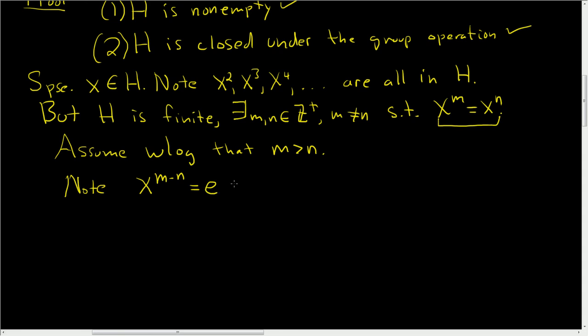Now, to involve the inverse, maybe just multiply both sides by the inverse. So X to the M minus N minus 1 is equal to X inverse. Okay, now the last step is to justify why this is in H. We have to explain why this is in H. So this is where we have to be really careful.